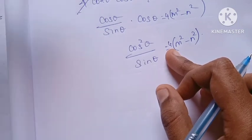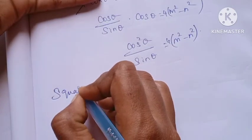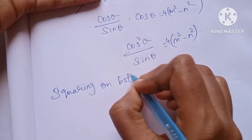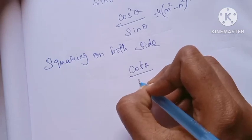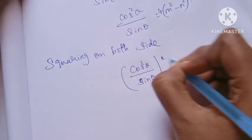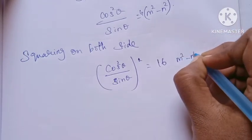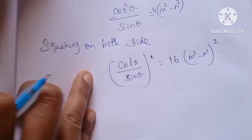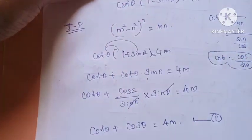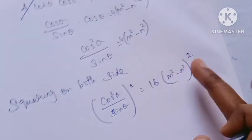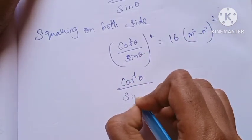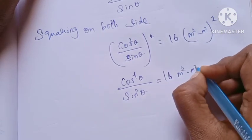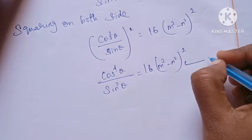M squared minus n squared. Now if you square both sides: squaring gives sin squared. 4 squared is 16. So (m squared minus n squared) whole squared. Squaring this side gives cos power 4 theta into sin squared theta equals 16 m squared n squared, whole squared. This is equation 3.